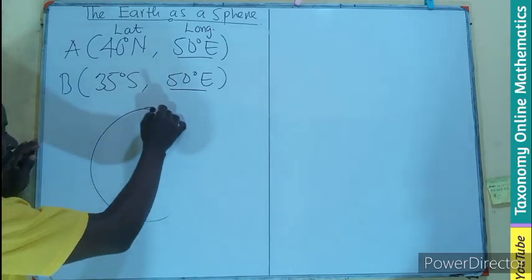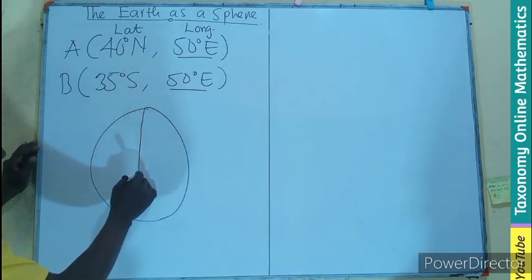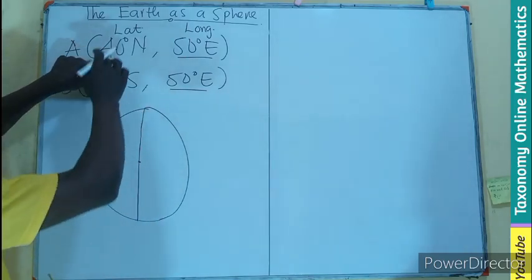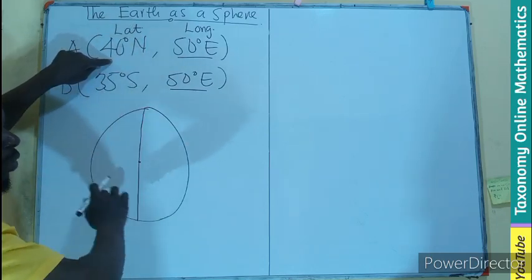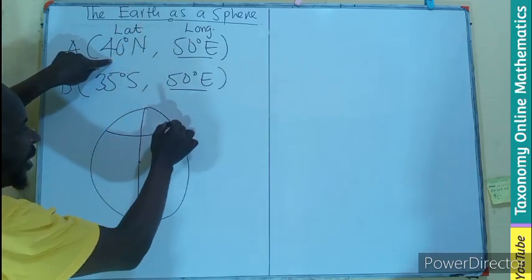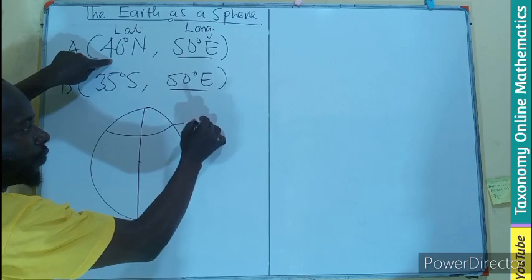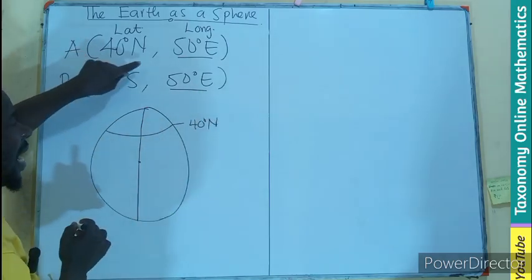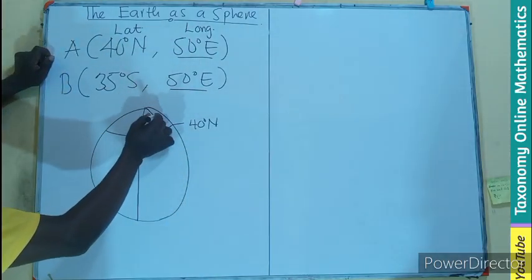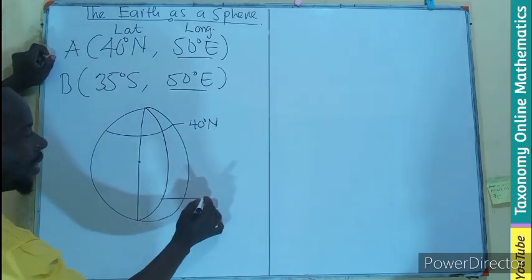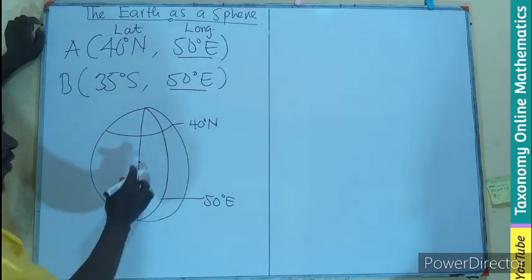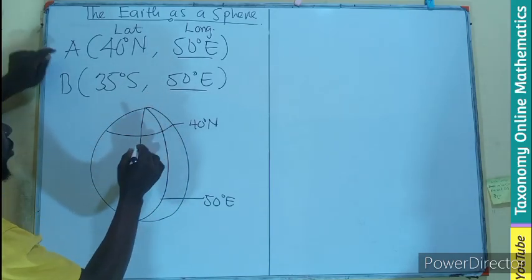Let's make latitude-longitude zero the meridian — that is going to be here. Beginning with latitude 40 north: any horizontal line represents latitude, so latitude 40 north is here — that is 40 degrees north. Then 50 degrees east is our vertical line, so this line is going to be 50 degrees east. The intersection of the longitude and the latitude gives you the position of the point — so this is A.